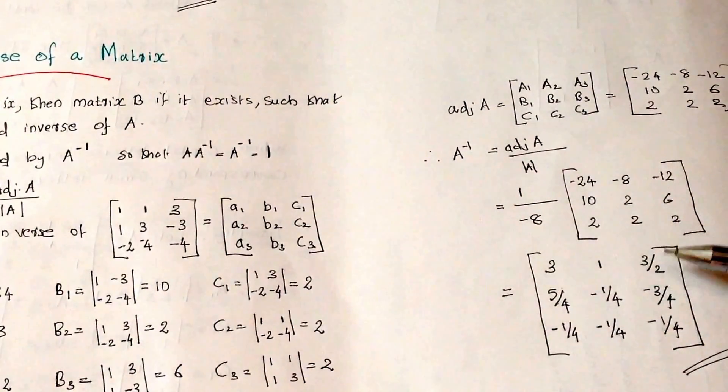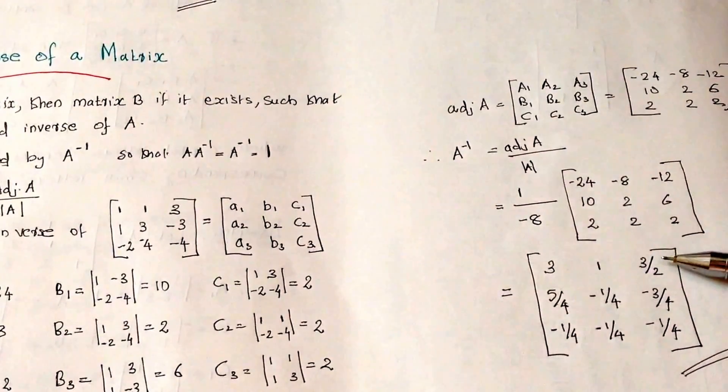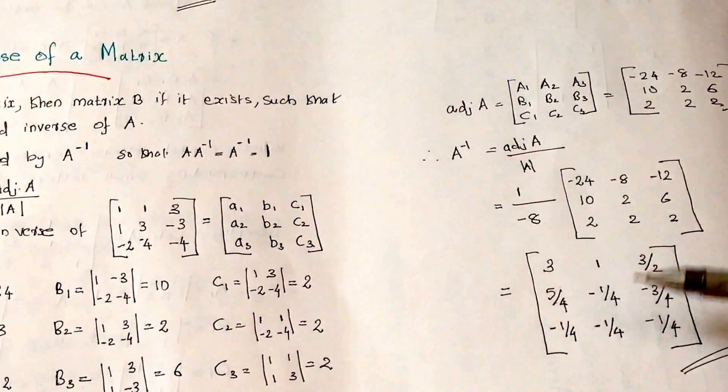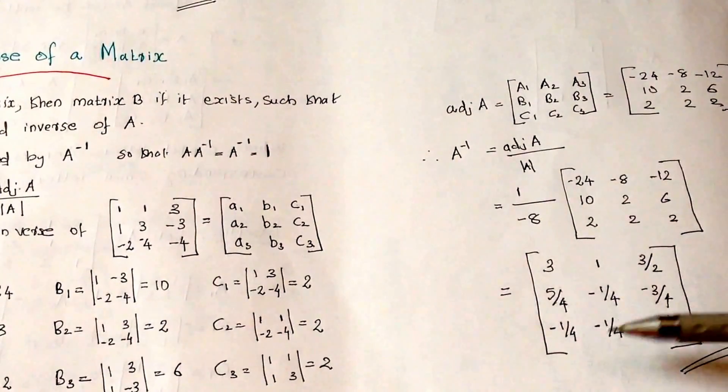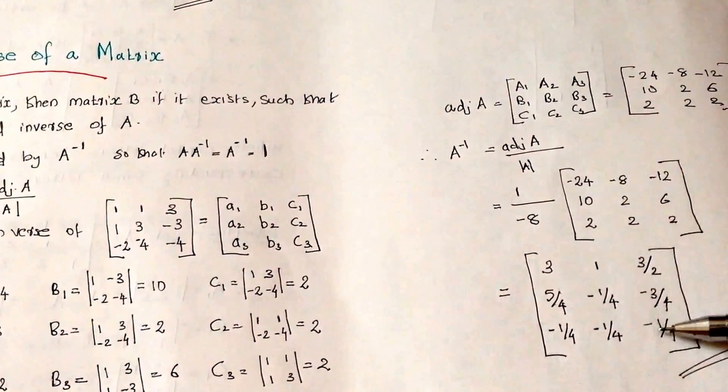So what we will get? 3, 1, 3 by 2, 5 by 4, minus 1 by 4, minus 3 by 4, minus 1 by 4, minus 1 by 4, and minus 1 by 4. So this is the way of finding the inverse of the matrix.